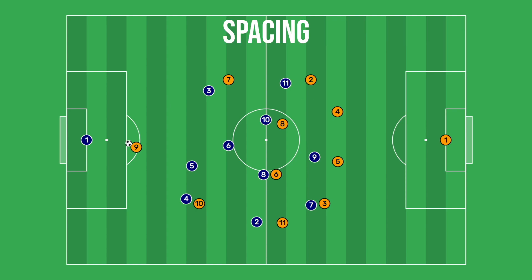Overall, spacing has a large effect on the options available to a team when attacking or defending. How a team spaces themselves out on the pitch will determine the amount of support a player with the ball receives. Combining spacing with structure is what determines the quality of support received, because the structure of a team will say who supports the ball in what situation. This means that a team will have to align both structure and spacing in order to provide the best possible support and the best possible team organization.